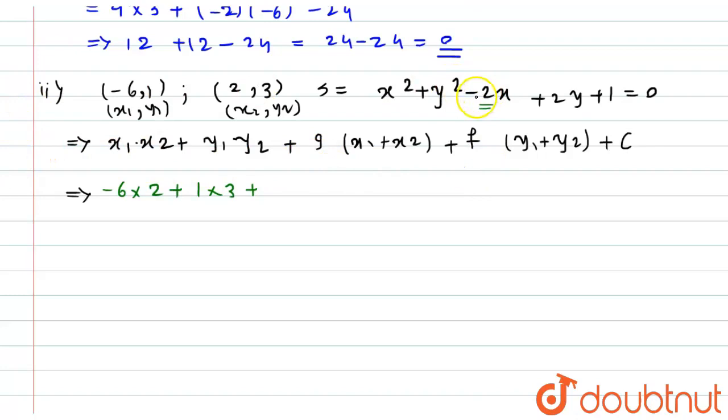So here, this is nothing but the value of 2g. So it will become -2/2. In bracket here, it will be -6 + 2 plus f is what? 2/2 in bracket, it will be 1 + 3 plus c is 1.